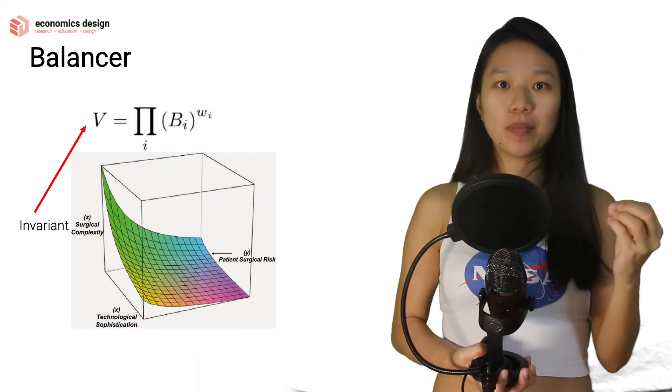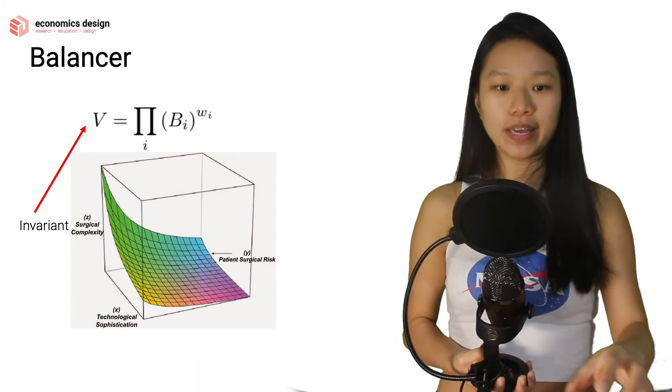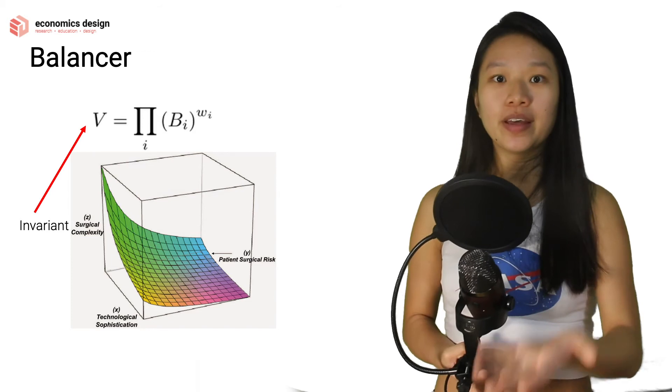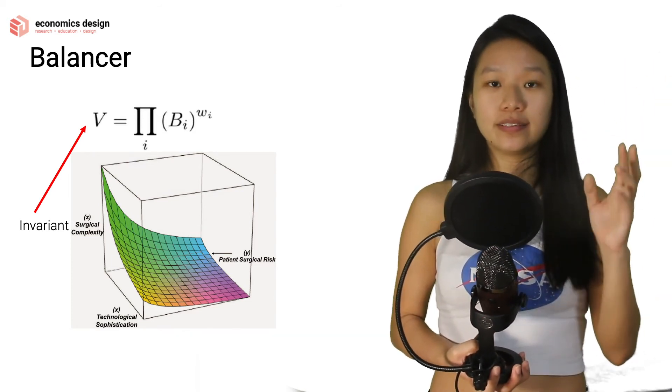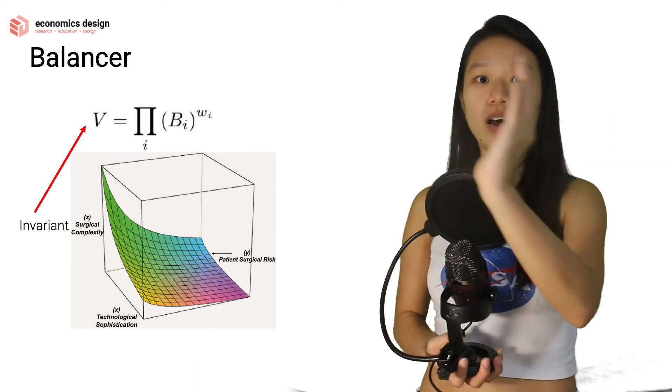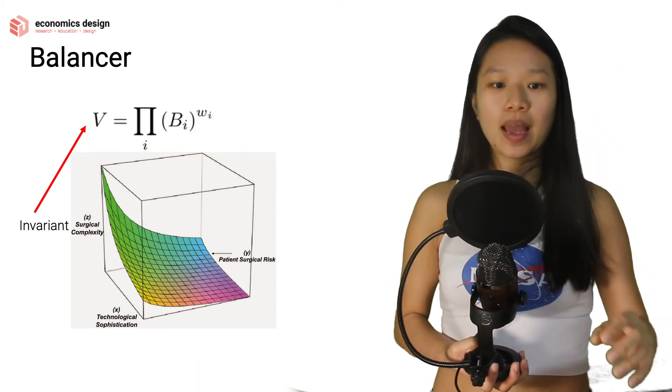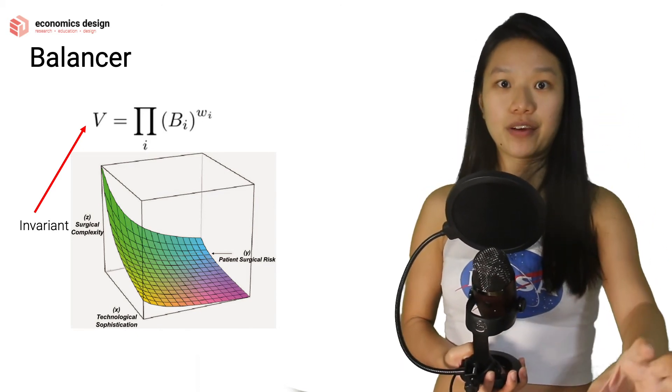With Balancer, it's more complicated because it's 3D, or 4D, or 5D, depending on how many tokens you have in place. And that curve, which is fixed, is called V. Of course, this V can change by having more liquidity, so the curve moves out or in. But the concept is that it's constant, it's fixed - it's the invariant.